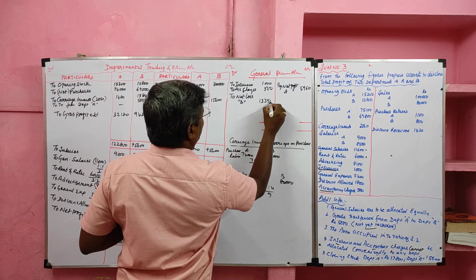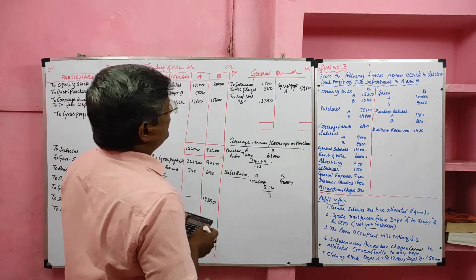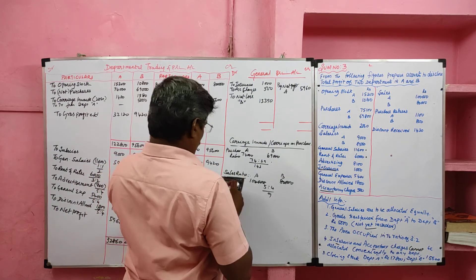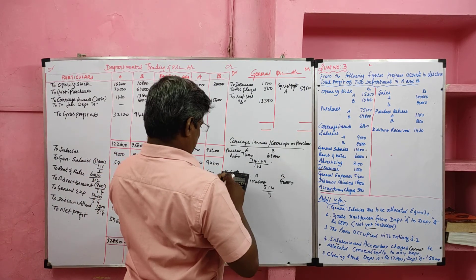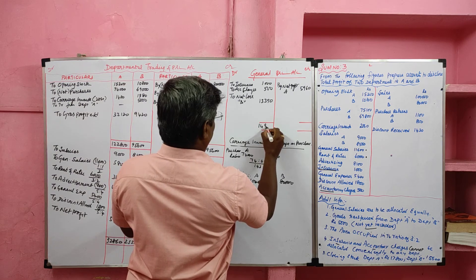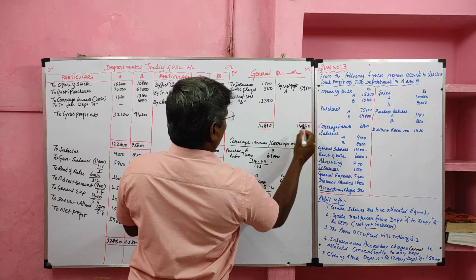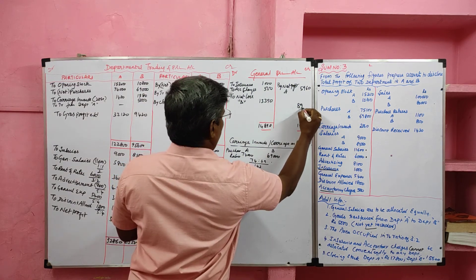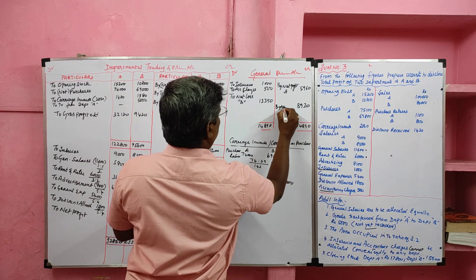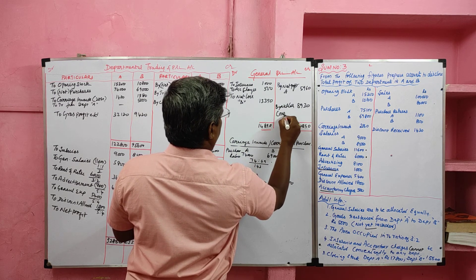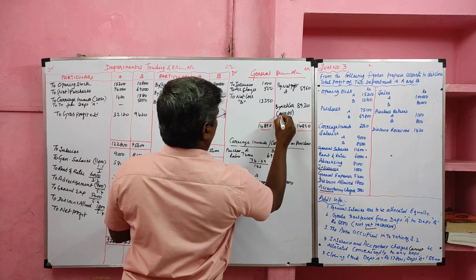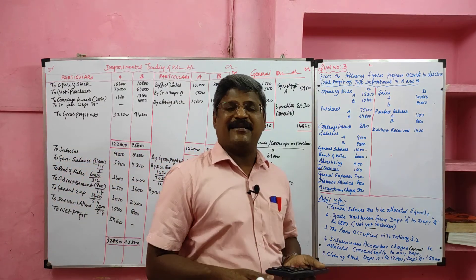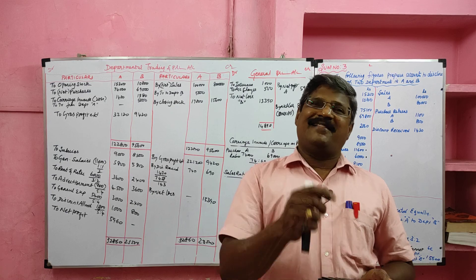Now balancing the general profit and loss account: the debit side value is heavier than the credit side. So overall it incurred a loss — 14,890 minus 5,960 gives a net loss of 8,930. Students, we have completed the third problem in relation to departmental accounting. In the next class we will solve a different problem. Till then, bye and thank you.